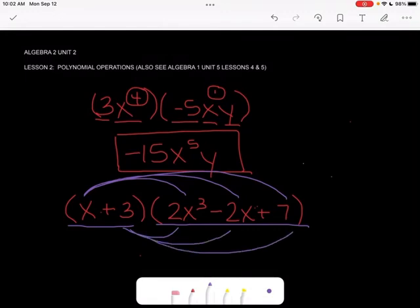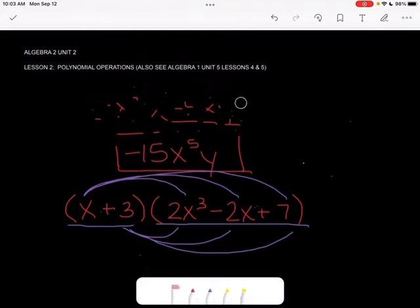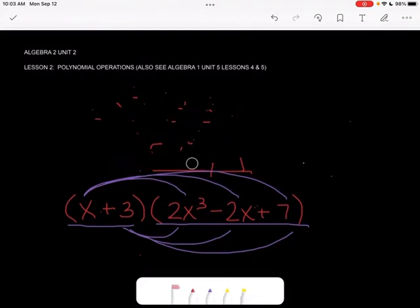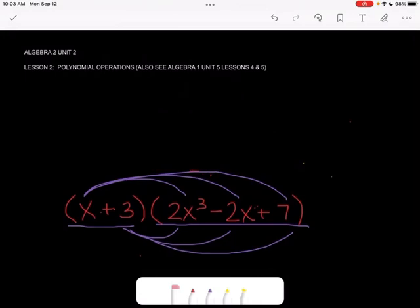When I do that, when I do x times 2x cubed, I get 2, I'm going to write it up here. Actually, I'm going to erase this so I have some space. When I multiply that, I get x times 2x cubed. And understand, that is a 1 in front. So 1 times 2 is 2. And that's x to the 4th, because there's an understood 1 there. And you add those exponents.